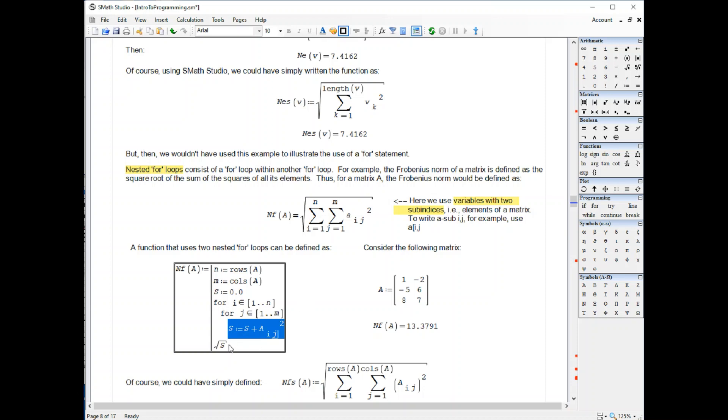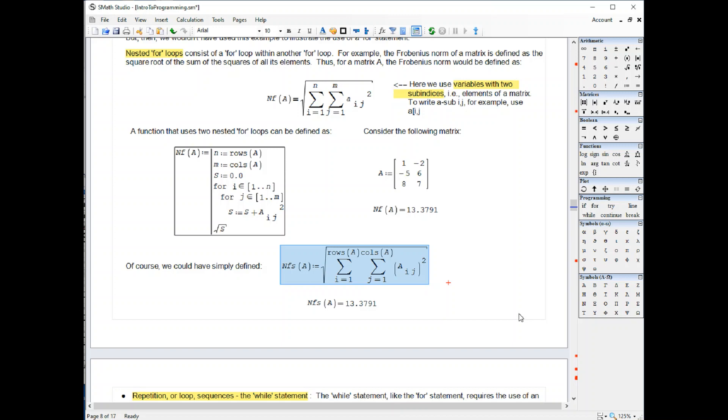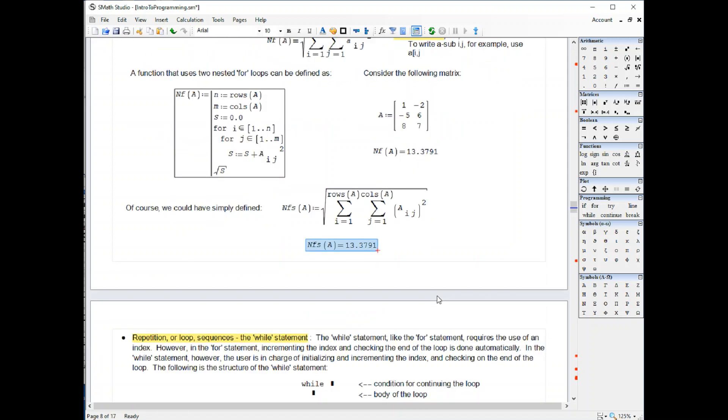And when we have that sum, we take the square root of that, and that will give the Frobenius norm, which you can program into a single statement in this way using summations. You get exactly the same result with the two examples.